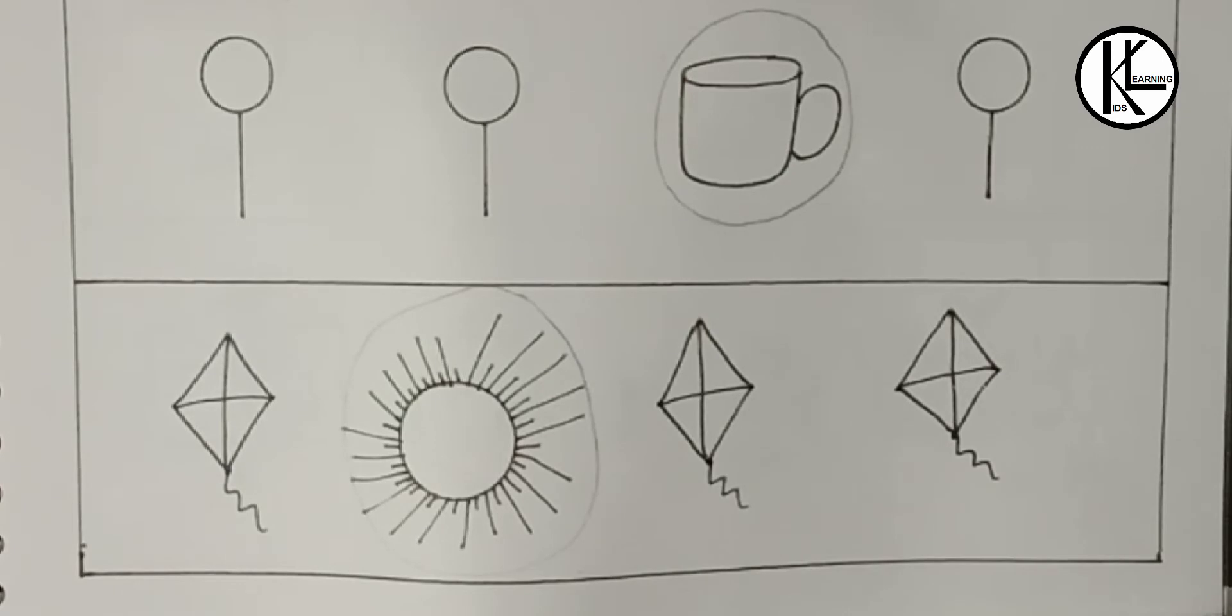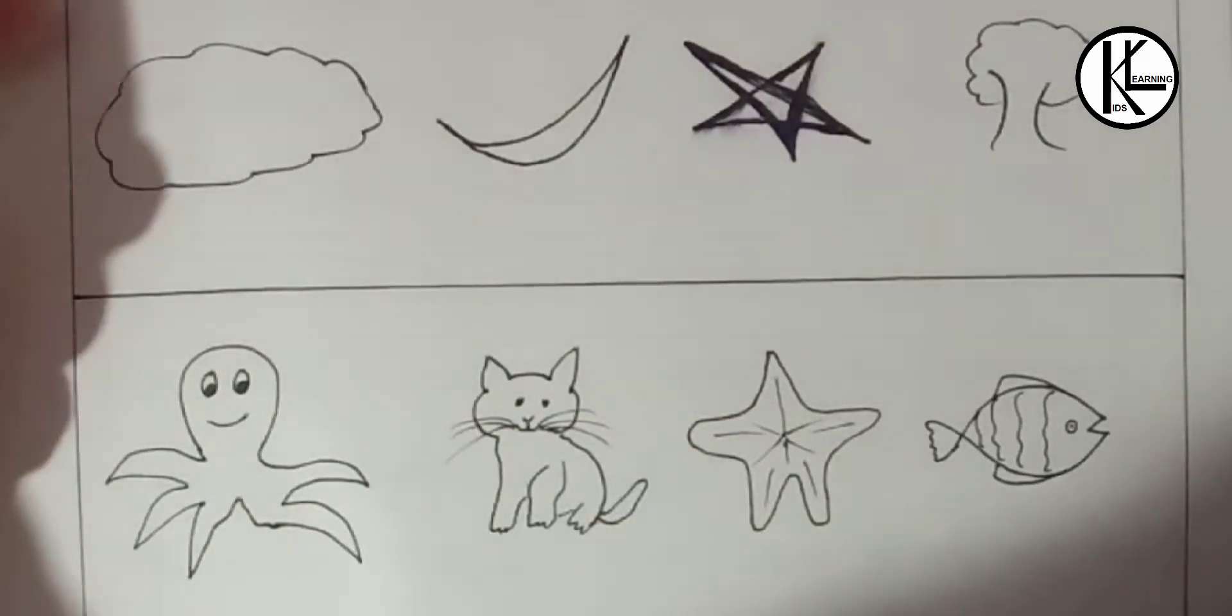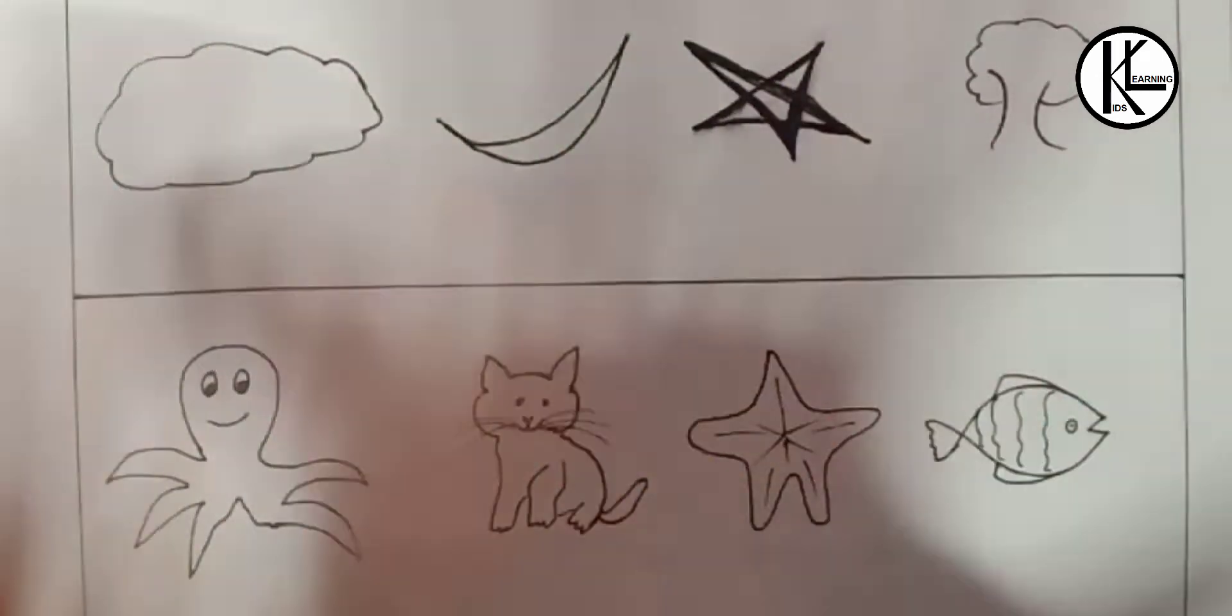Now we will see second worksheet. Here you can see I have drawn the objects according to the group.